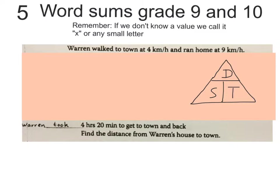Good day. This is our fifth video on word sums for grade 9 and 10. This one concerns an example of speed, distance and time. That's why I drew this little triangle over here. You must ask your teacher or somebody to explain to you that this triangle says that if you want distance, you go speed times time, and then distance divided by time will give you speed, and distance divided by speed will give you time. This is a triangle frequently used in science and maths.